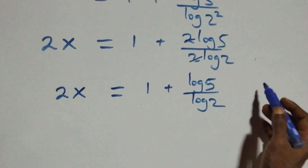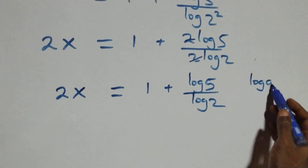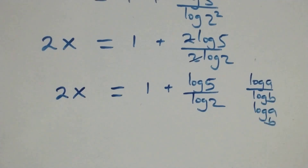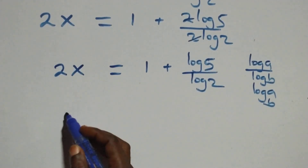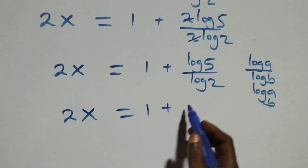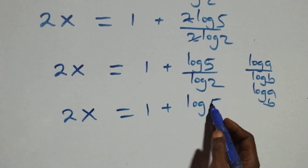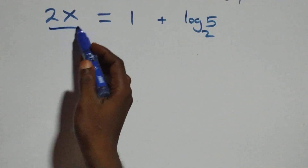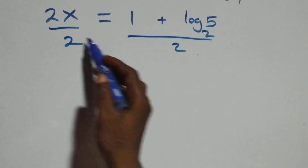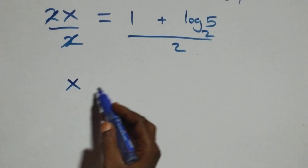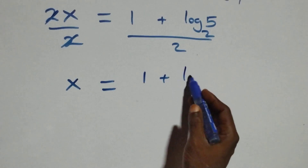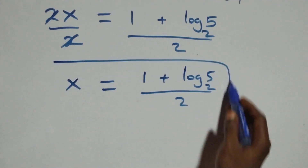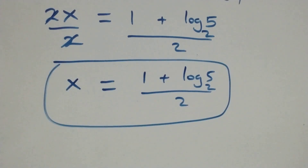Then applying the change of base formula, where log a over log b is the same as log a to base b, what we have becomes 2x equals 1 plus log 5 base 2. The next step: we divide both sides by 2. The 2s cancel, and we have x equals (1 plus log 5 base 2) all over 2. So the value of x is (1 plus log 5 base 2) all over 2.